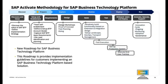SAP Activate Methodology for SAP Business Technology Platform: The SAP Activate methodology for SAP Business Technology Platform provides implementation guidelines for customers deploying BTP-based solutions. It includes phases, deliverables, and tasks following the SAP Activate framework, with accelerators linked to relevant tasks for easy access. Deliverables and tasks are listed sequentially, though some may need to be parallelized for efficiency. This roadmap will be rolled out in phases, starting with a focus on governance and key implementation milestones, and later expanding to specialized areas like app development, automation, integration, data and analytics, and AI.